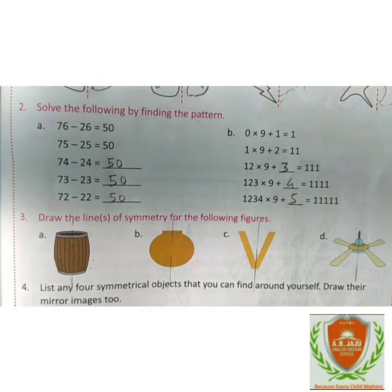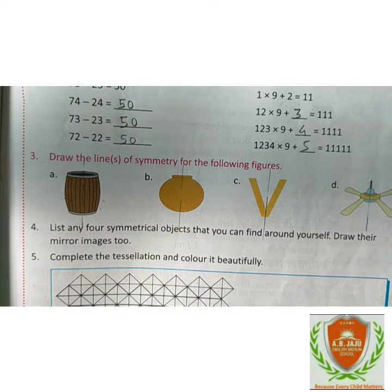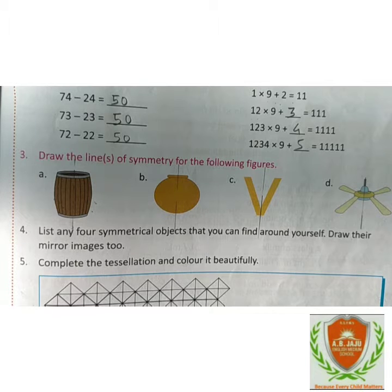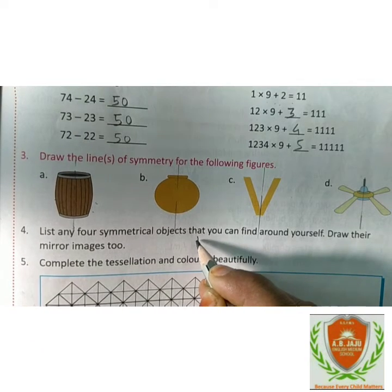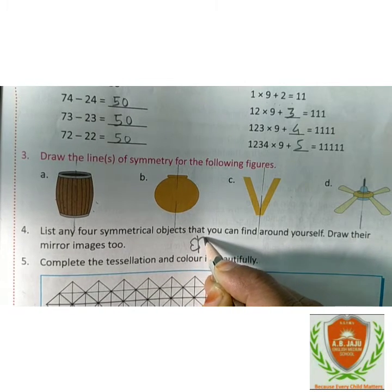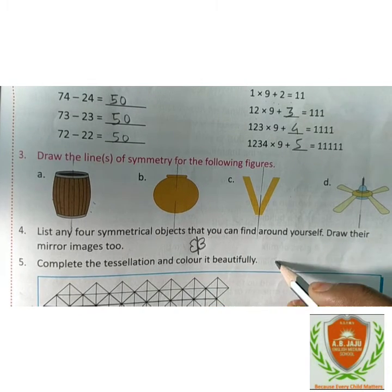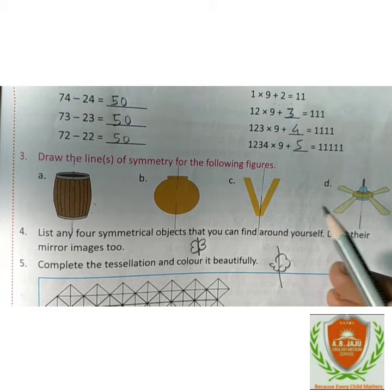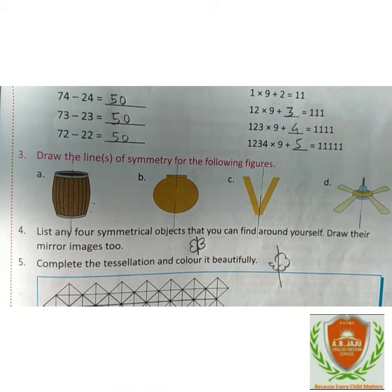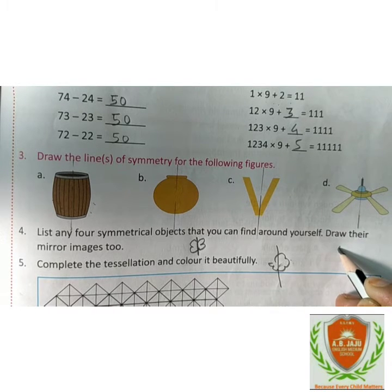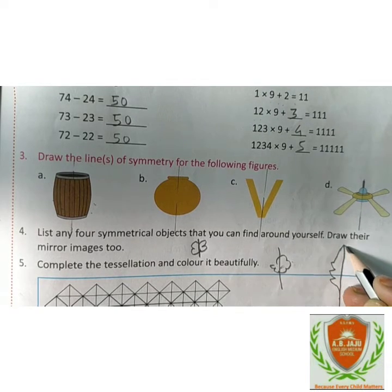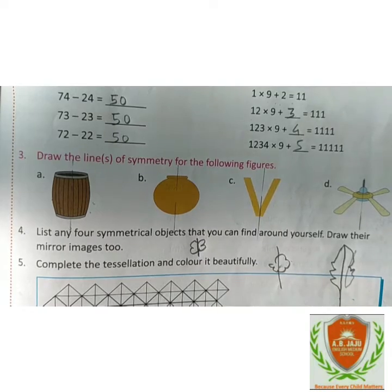Next: list any four symmetrical objects that you can find around yourself and draw their mirror images too. Do you have symmetrical objects around you? Yes — there are flowers! If there is a flower, you can divide it into two equal parts and draw a mirror image.